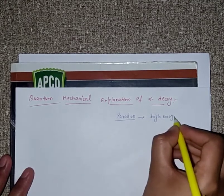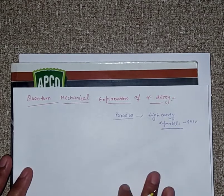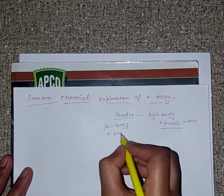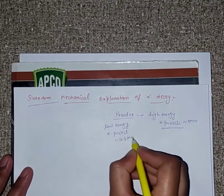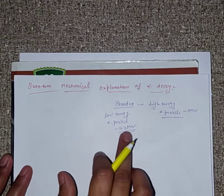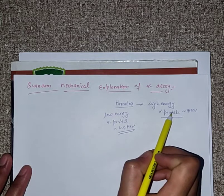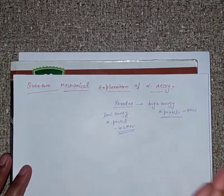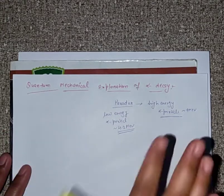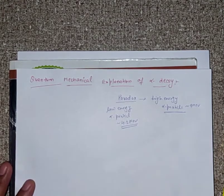One side of the paradox is a high energy alpha particle with energy 9 mega electron volts, and the other side is a low energy alpha particle with energy 4.2 mega electron volts, or about 5.2 mega electron volts. This is the paradox of classical mechanics, which was the dynamic theory.